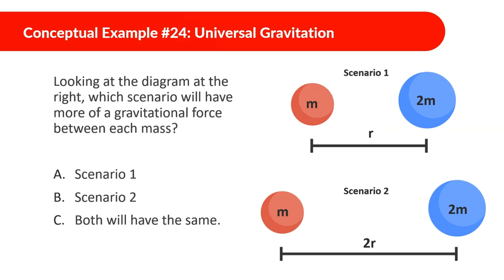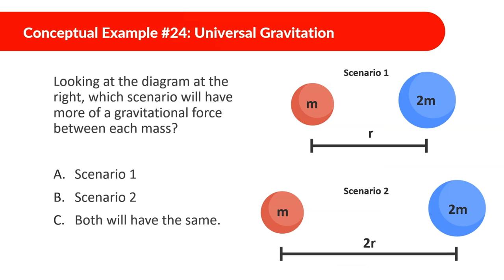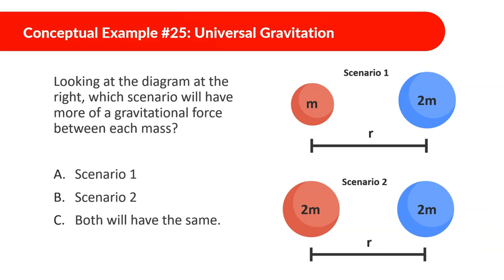This demonstrates how all masses on Earth attract each other. Conceptual example 24: looking at the diagram, which scenario will have more gravitational force? In both scenarios we have the same masses M and 2M, but the distances differ. Scenario one will have more gravitational force because the objects are closer together — they attract each other more strongly.